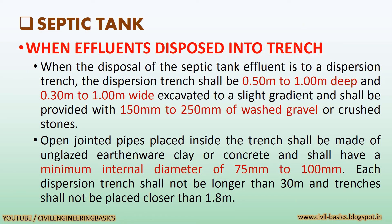When the disposal of septic tank effluent is to a dispersion trench, the dispersion trench shall be 0.50 meter to 1.00 meter deep and 0.30 meter wide, excavated to a slight gradient, and shall be provided with 150 mm to 250 mm of washed gravel or crushed stones. Open jointed pipes placed inside the trench shall be made of unglazed earthenware clay or concrete and shall have a minimum internal diameter of 75 mm to 100 mm. Each dispersion trench shall not be longer than 30 meter, and trenches shall not be placed closer than 1.8 meter apart.